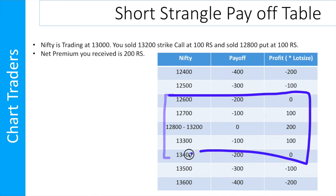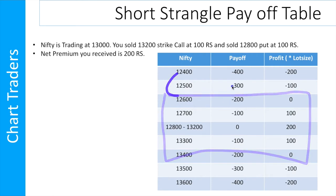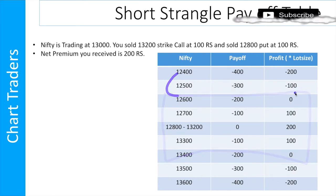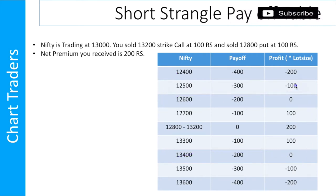If Nifty expires outside this range, for every 1 point Nifty moves beyond the break-even, you will get 1 point of loss. So if Nifty moves 100 points past break-even, you will get 100 loss.